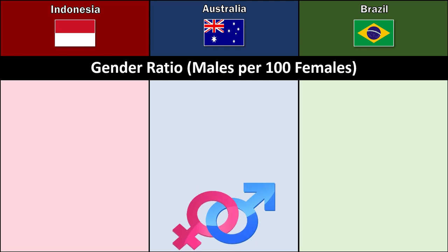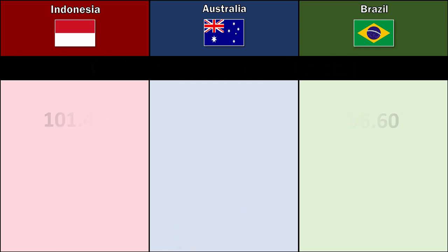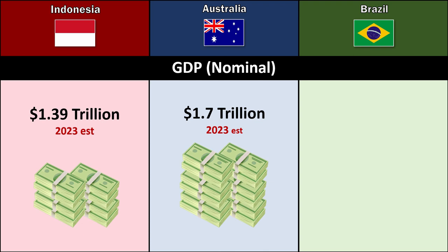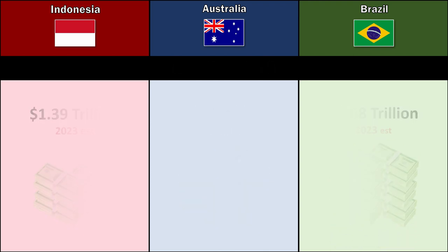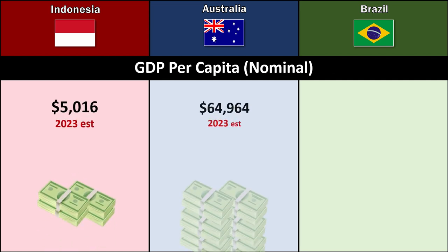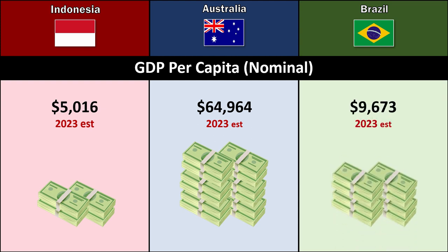Gender ratio (males per 100 females): Indonesia 101.40, Australia 98.60, Brazil 96.60. Gross Domestic Product: Indonesia 1.39 trillion, Australia 1.7 trillion, Brazil 2.08 trillion. GDP per capita: Indonesia $5,016, Australia $64,964, Brazil $9,673.